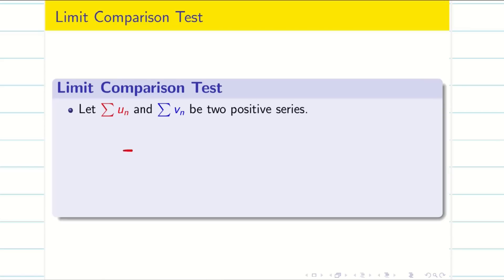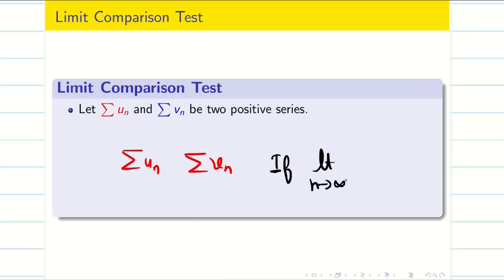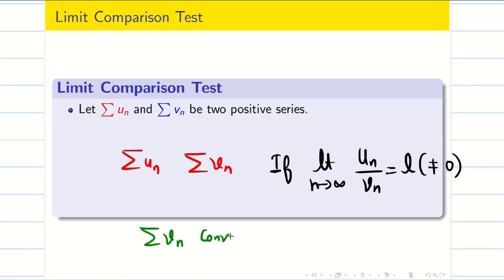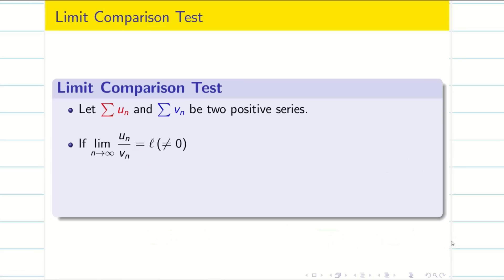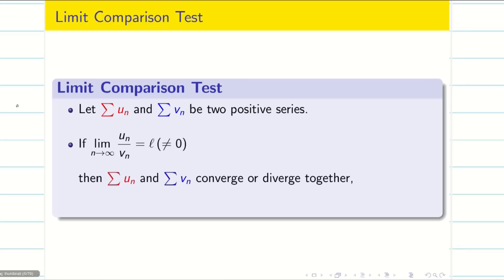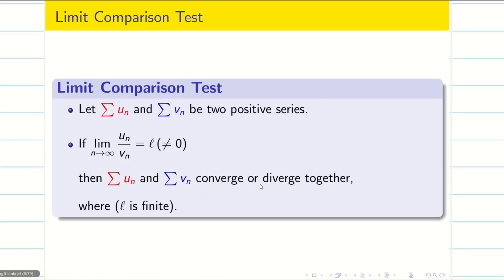Let us consider two positive term series, summation un and summation vn. If the limit as n tends to infinity of un by vn equals L, where L is some finite number and very importantly, L is not equal to 0, then if vn converges, summation un also converges. That is, summation un and summation vn both converge together or diverge together. This is the result.